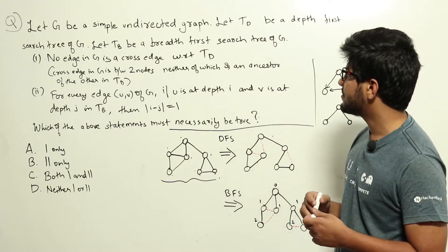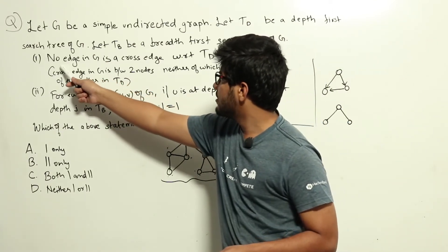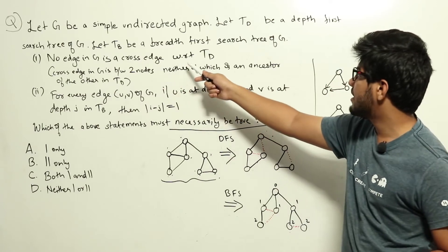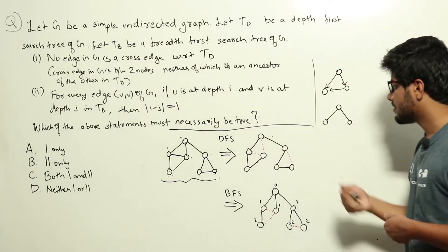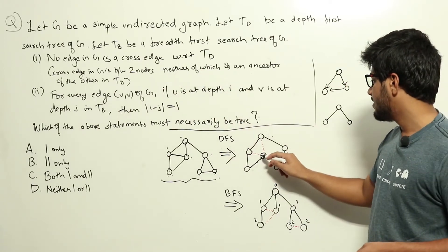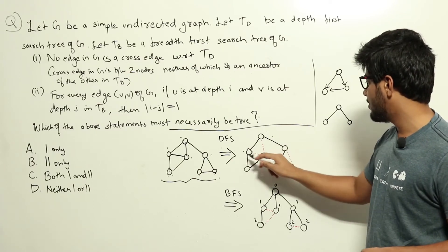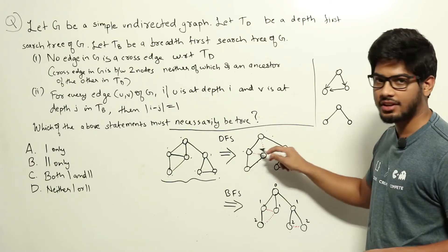In the question they are asking: no edge in G is a cross edge with respect to Td. So, let us take a look at this edge. It is between this and this. And this node is an ancestor of this node. So, it is not a cross edge.